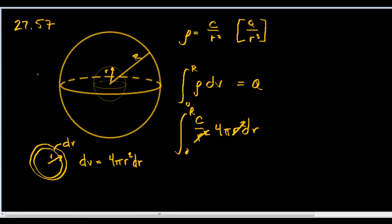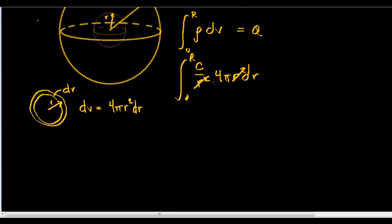The r's cancel, and now we have c 4 pi dr. So what happens there? Those are all constants, they all come outside. We'll have c 4 pi and the integral from 0 to R of dr. That equals q, the total charge of our sphere.